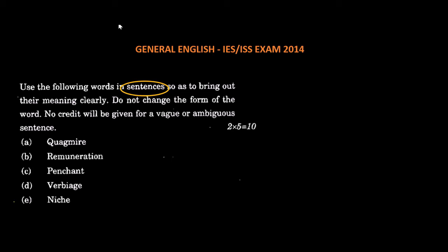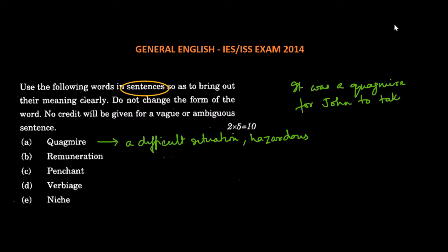The first of them is quagmire. Now quagmire means a difficult situation, difficult situation or a hazardous situation. It actually means a marshy area which gives away when you step on it. So the sentence could be, it was a quagmire for John to take the examination with a broken right hand.